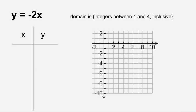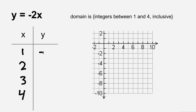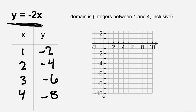Now let's consider the equation y equals negative 2x, where the domain — the x values — are the integers between 1 and 4 inclusive. So the only values of x will be 1, 2, 3, and 4. We only have to find the y values for those values, and the y values respectively are negative 2, negative 4, negative 6, and negative 8, which we get by plugging in the x values into the equation.